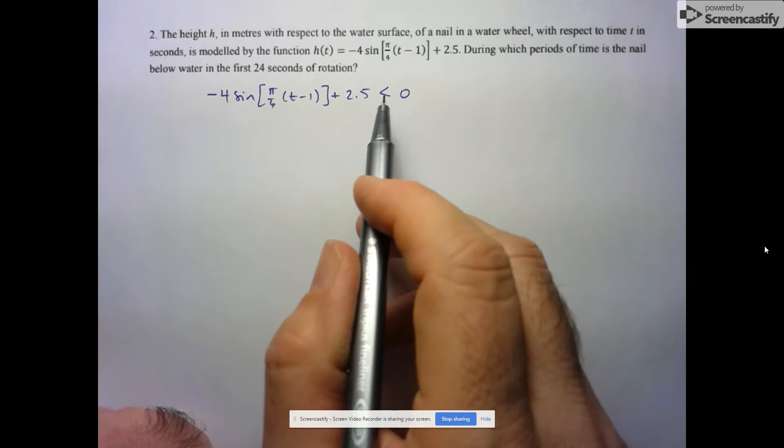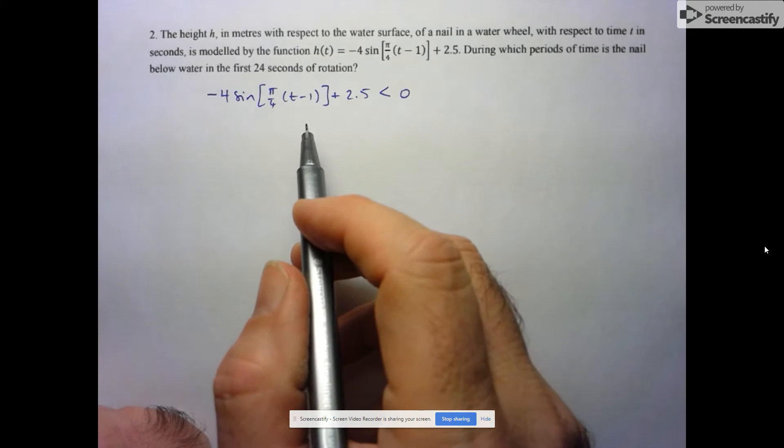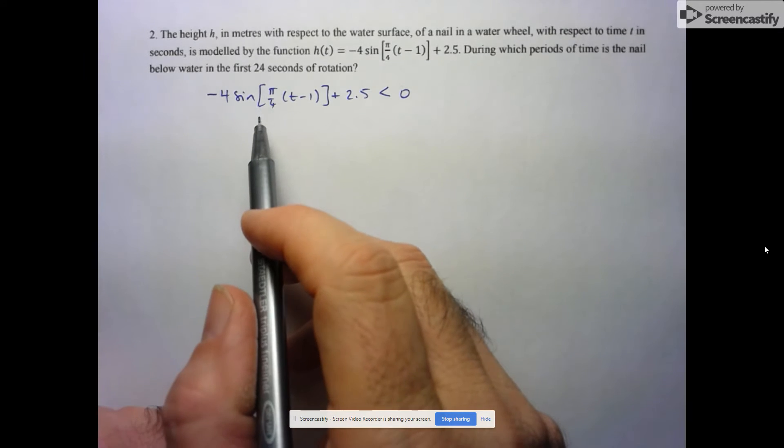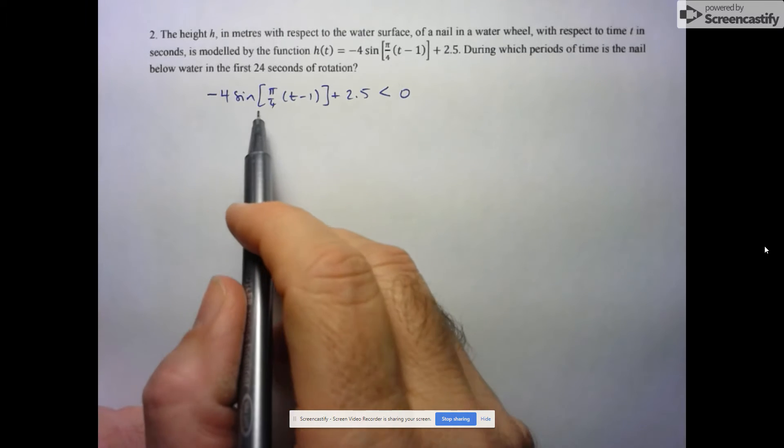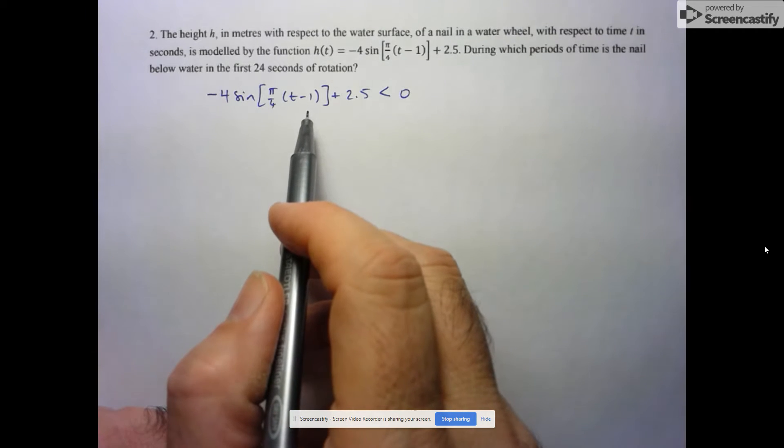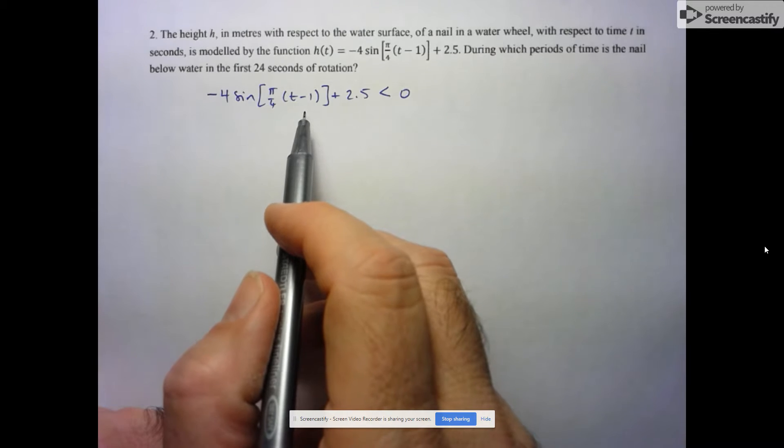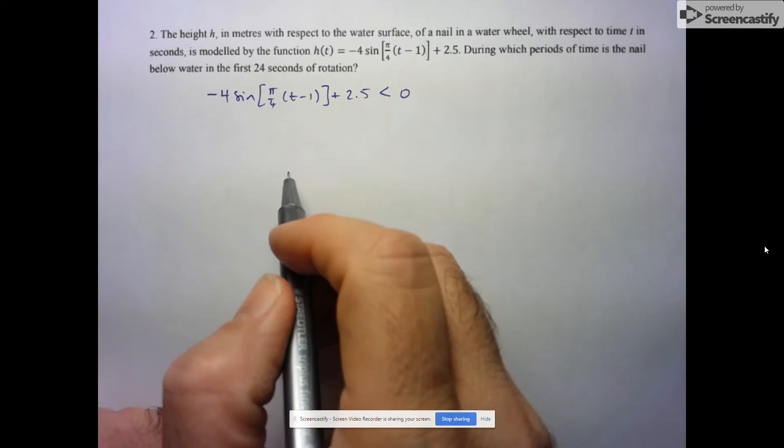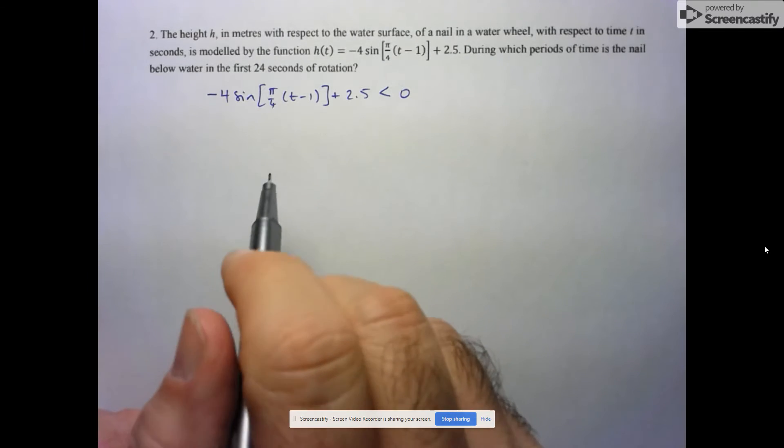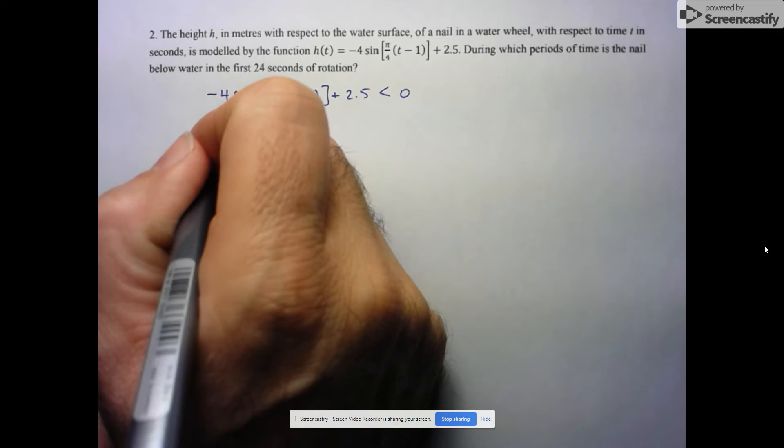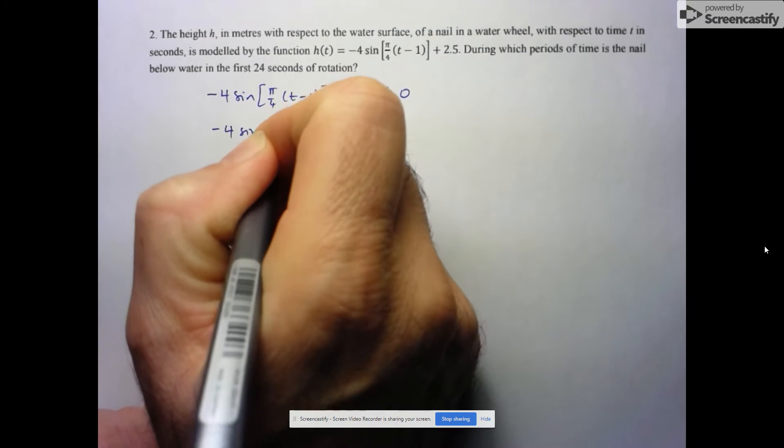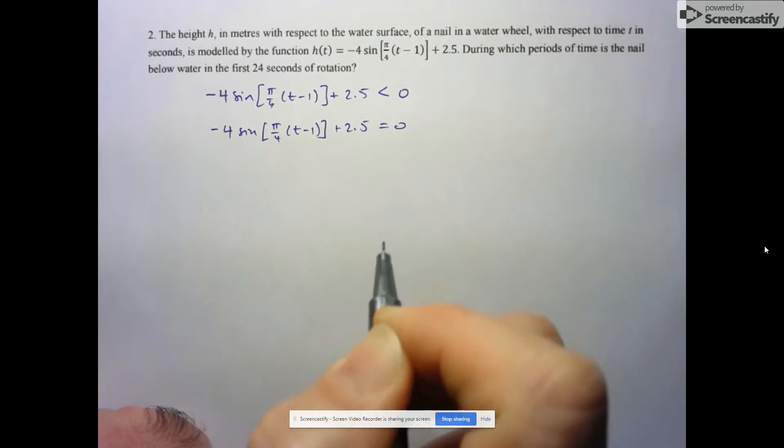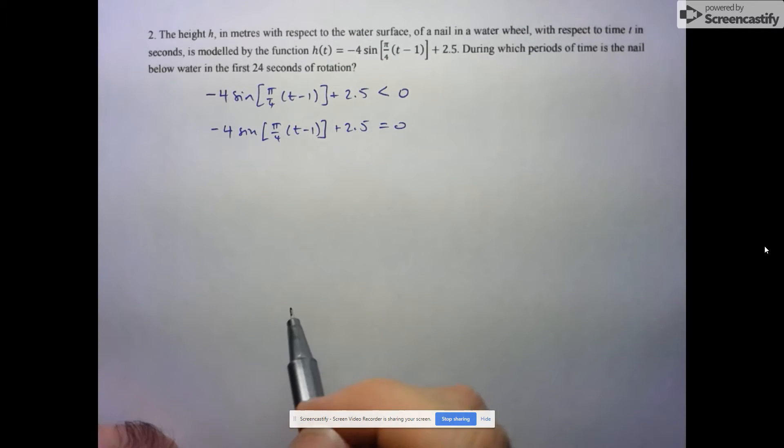Essentially what we're going to be solving here is a trigonometric inequality because we're going to take this expression which represents the height of the nail and determine when this height is below zero, since we're assuming that the water level is a height of zero. We're going to solve this inequality by determining the x-intercepts of this function, and we know that those are the only places that the function can change sign.